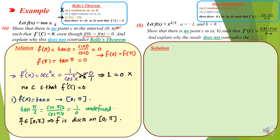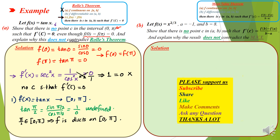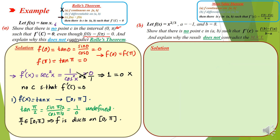This example does not contradict Rolle's Theorem because one of the conditions is not satisfied — namely, continuity. Rolle's Theorem has three conditions: continuity, differentiability, and then f(a) = f(b). Most students start with the third condition, which is not correct. You must check continuity and differentiability first, then the endpoint values, and only then is a C in the interval guaranteed.